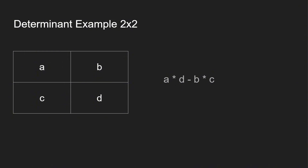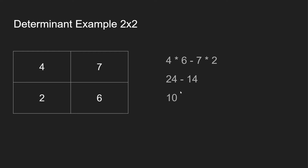Let's look at examples for a 2x2 and a 3x3 matrix. I'll label the 2x2 matrix entries A, B, C, D. The calculation is: A times D minus B times C. With numbers: four times six is 24, seven times two is 14, so 24 minus 14 gives a final answer of 10.